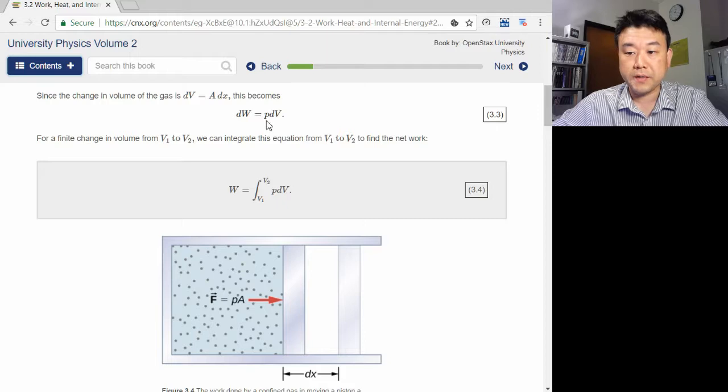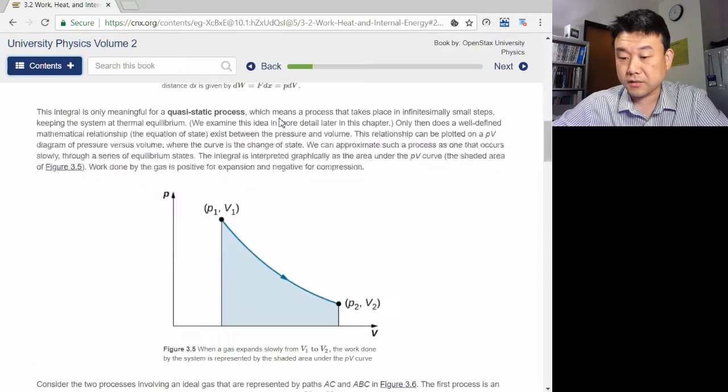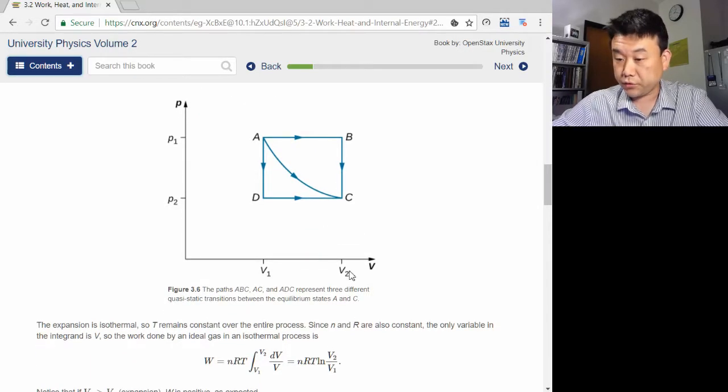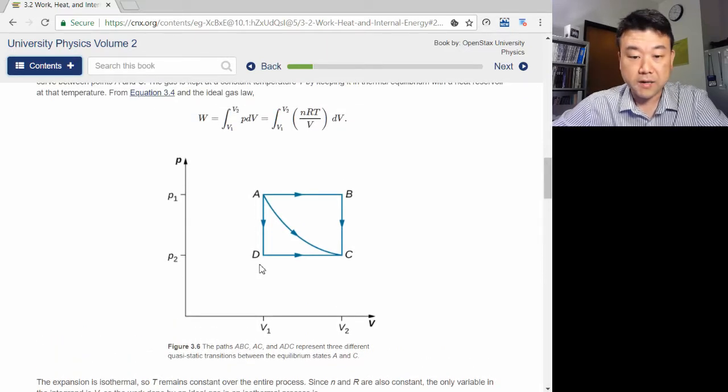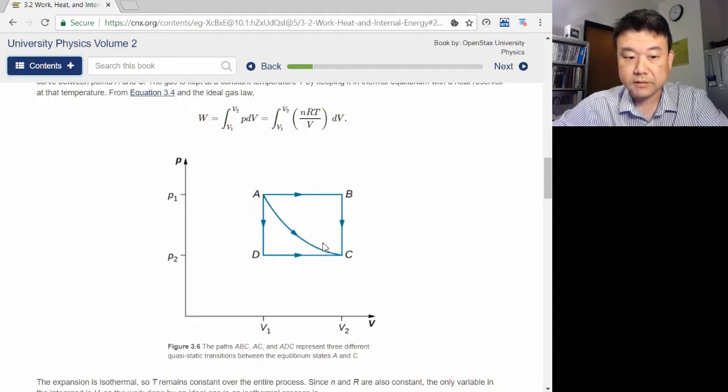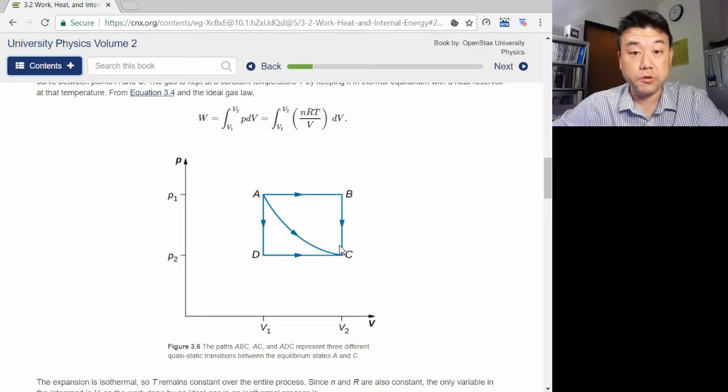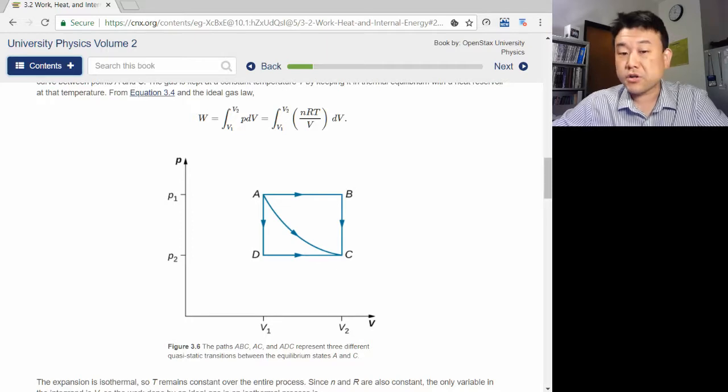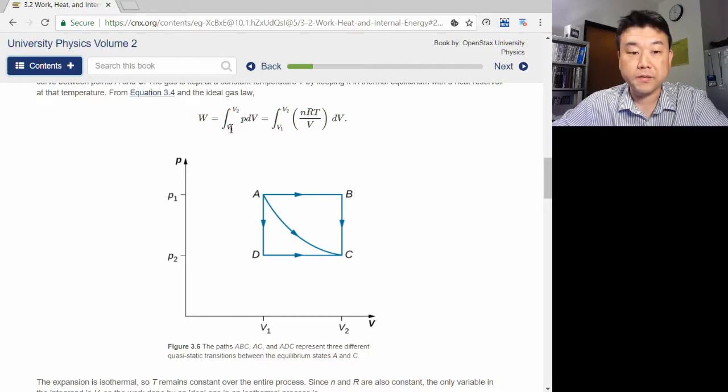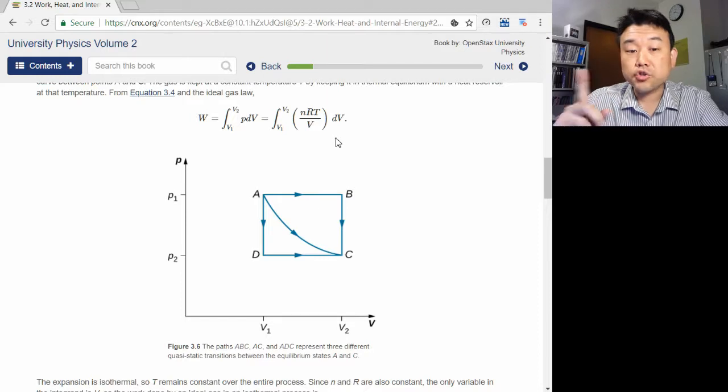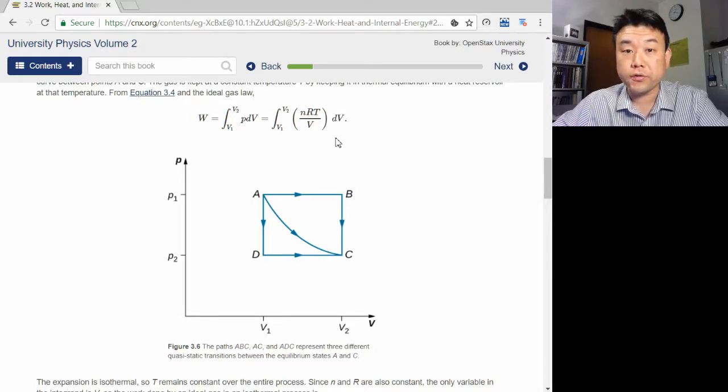dW is equal to P times dV. In simple scenarios where pressure is constant, we can just say work done is pressure times change in volume, V2 minus V1. But in more complex scenarios, for example, in a process where temperature remains constant, the ideal gas law tells us that the pressure and volume are inversely proportional. So as volume expands, pressure is not constant, so you have to set up an integral and actually do the integral to figure out how much work is done. There is a tutorial question in your homework set to walk you through an example of this.